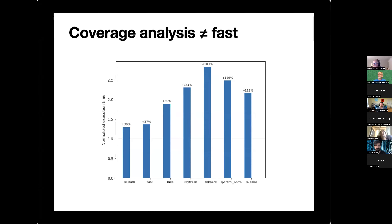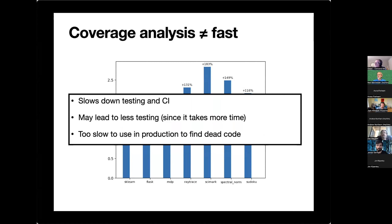How bad is that? It depends on how big your suite is. If you're sklearn, it takes several minutes to run — that's 30% of several minutes. The problem with this overhead is it slows you down. If you have a workflow where you're making a change, running a test, making a change, running a test — nobody has extra time in the day. It may lead to less testing. And certainly if it makes your core product 100% slower, or even 30% slower, you're not going to try running it in production.